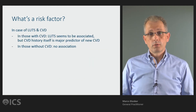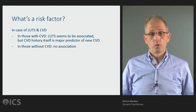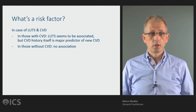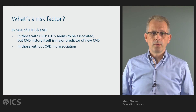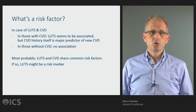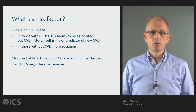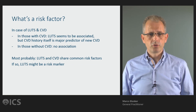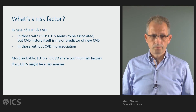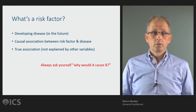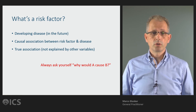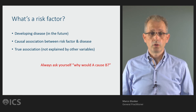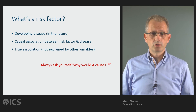In summary, do lower urinary tract symptoms give an increased risk of cardiovascular disease? In the publications presented in this video, we showed that in those with cardiovascular disease, lower urinary tract symptoms seem to be associated. But we need to be aware that cardiovascular history itself is a major predictor of new events. In those without cardiovascular disease, there was no association found. Most probably, lower urinary tract symptoms and cardiovascular disease share common risk factors — for example, age — and if so, lower urinary tract symptoms might be a risk marker. The three points to remember about risk factors: developing disease in the future in people without the disease; a causal association between the risk factor and disease; and the association should be true, not explained by other variables. Always ask yourself: why would A cause B?